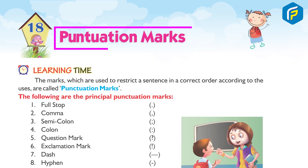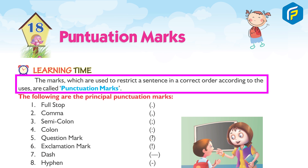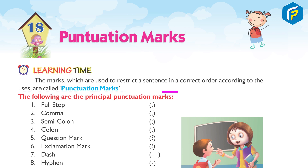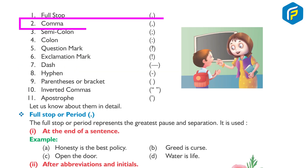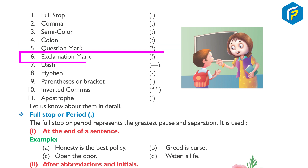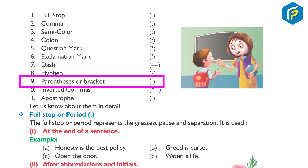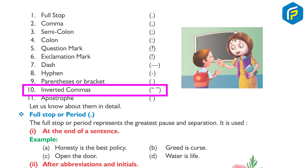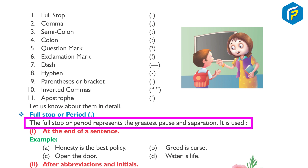Chapter 18: Punctuation Marks. The marks which are used to arrange a sentence in correct order according to usage are called punctuation marks. The following are the principal punctuation marks: one, full stop; two, comma; three, semicolon; four, colon; five, question mark; six, exclamation mark; seven, dash; eight, hyphen; nine, parentheses or double dashes; ten, inverted commas; eleven, apostrophe. Let us know about them in detail.